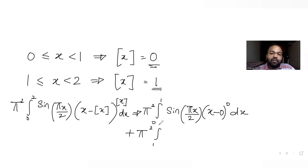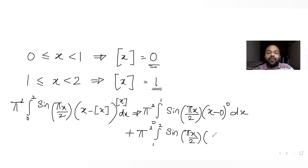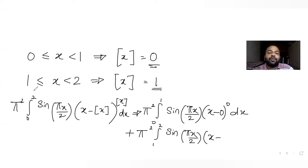The second part is π² times the integral from 1 to 2 of sin(πx/2) times (x minus 1) raised to 1, because for values of x from 1 to 2, the greatest integer function equals one.